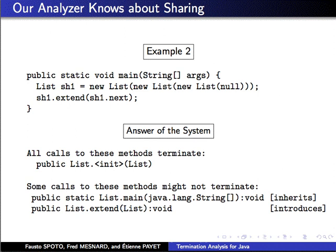For instance, you call Extend and you provide two arguments which are two sharing lists. In this case, since while you modify the first argument you also modify the other, the termination of Extend is not proved anymore. And correctly, our analyzer will tell you that Extend does not terminate anymore.